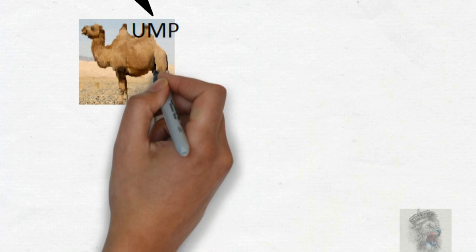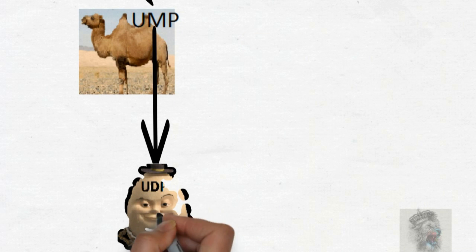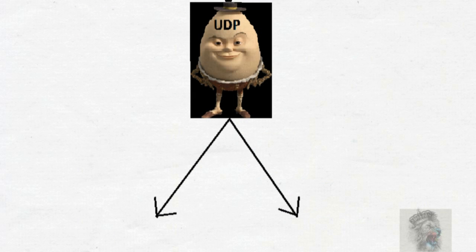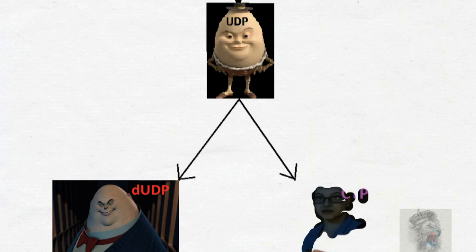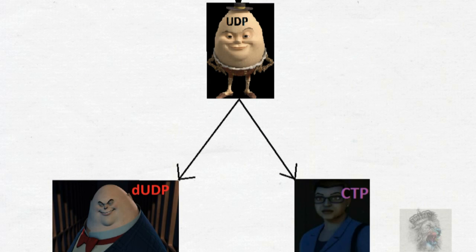After that, this UMP will convert into UDP. UDP will then convert into dUDP and CTP. CTP stands for cytidine triphosphate.